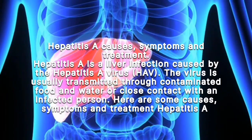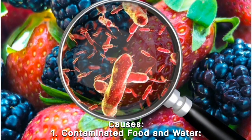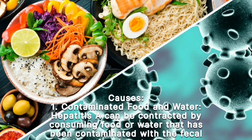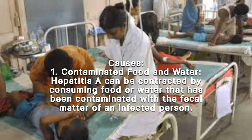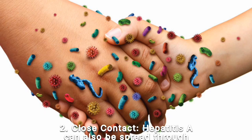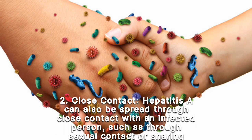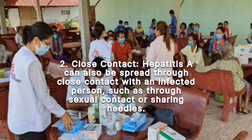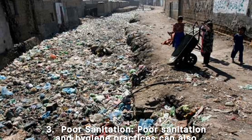Causes of hepatitis A: 1. Contaminated food and water — hepatitis A can be contracted by consuming food or water that has been contaminated with the fecal matter of an infected person. 2. Close contact — hepatitis A can also be spread through close contact with an infected person, such as through sexual contact or sharing needles.